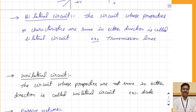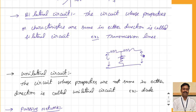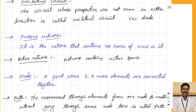A bilateral circuit is a circuit whose properties or characteristics are the same in either direction. That means whether you connect one side or the second side, the overall characteristic does not change. For example, if you apply voltage to a circuit and take output voltage V-naught, you will get similar output even if you interchange input and output — the circuit behavior will not change. The example of this is transmission lines. A unilateral circuit is one whose properties are not the same in either direction — for example, a diode: in forward bias it acts as a short circuit and in reverse bias as an open circuit. So characteristics are not the same in both directions — those are called unilateral circuits.